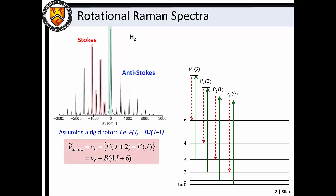Assuming a rigid rotor approximation, we see that these rotational Stokes lines may be described by nu0 minus the change in rotational energy, where nu0 is the laser wavenumber and j is the j value of the initial state.